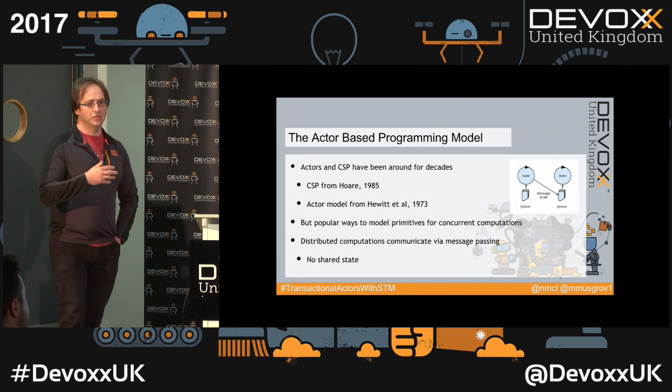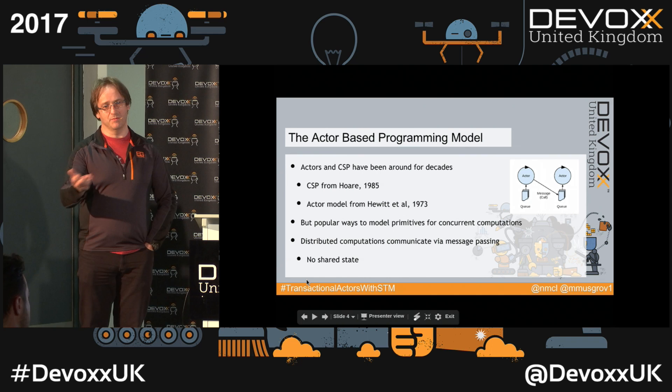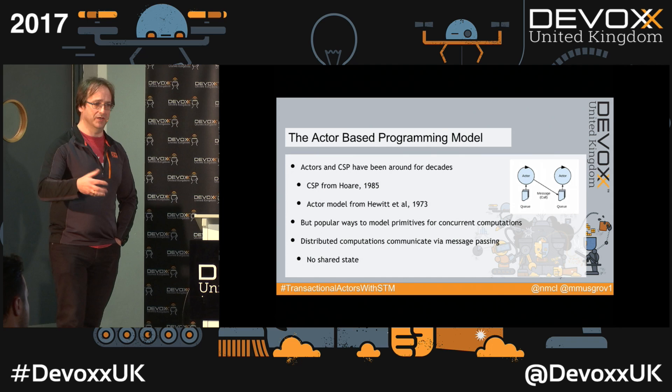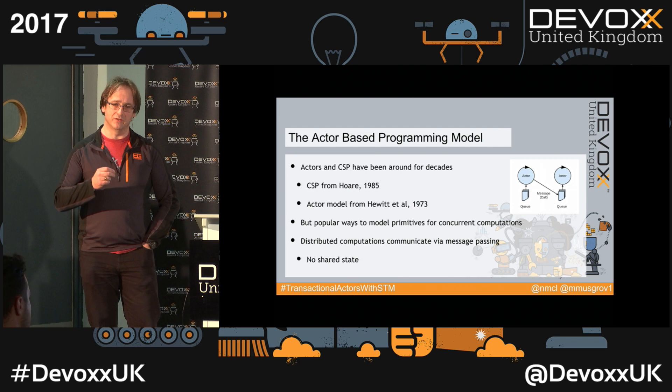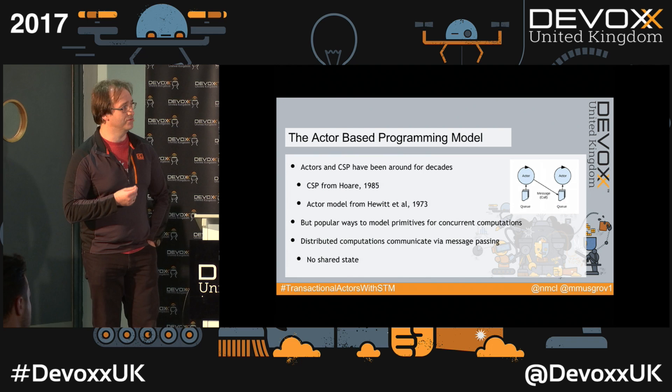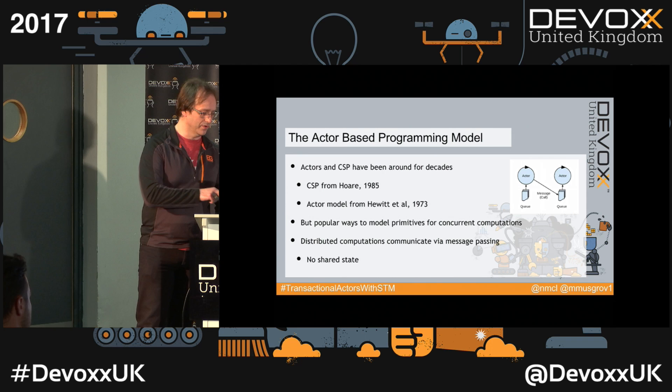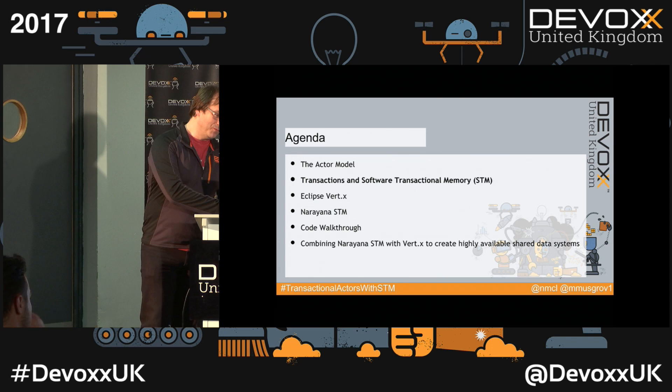Actors only communicate through message passing — there is no direct shared state in the actor model. If you want shared state, you send a message saying 'this is my state,' and the other actor can see what your state was at the time the message was sent. Actors and CSP have been popular because they are a really good way of thinking about distributed systems at scale. Many universities have been teaching CSP for decades.